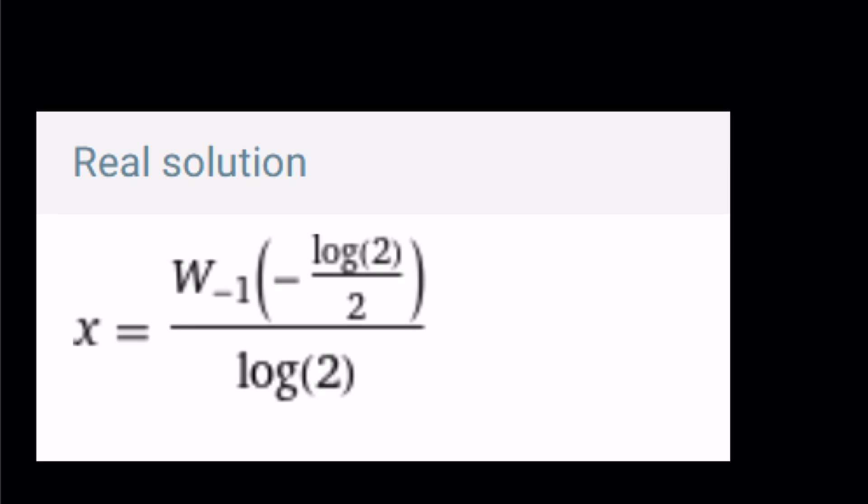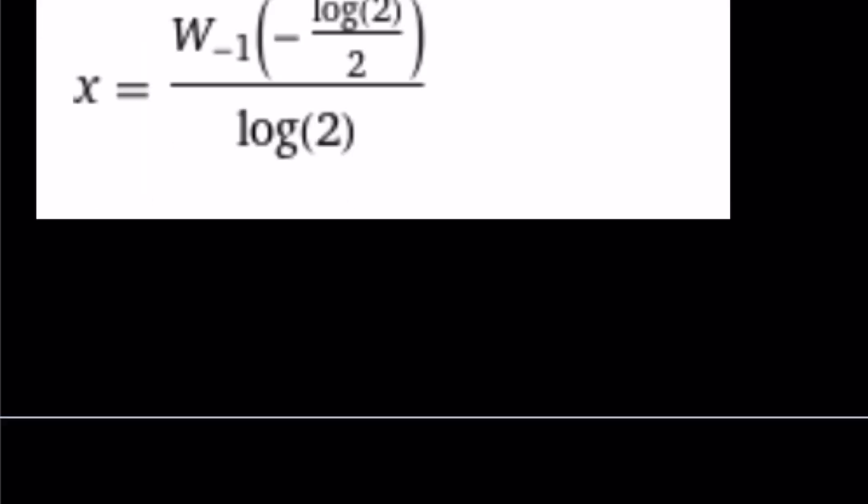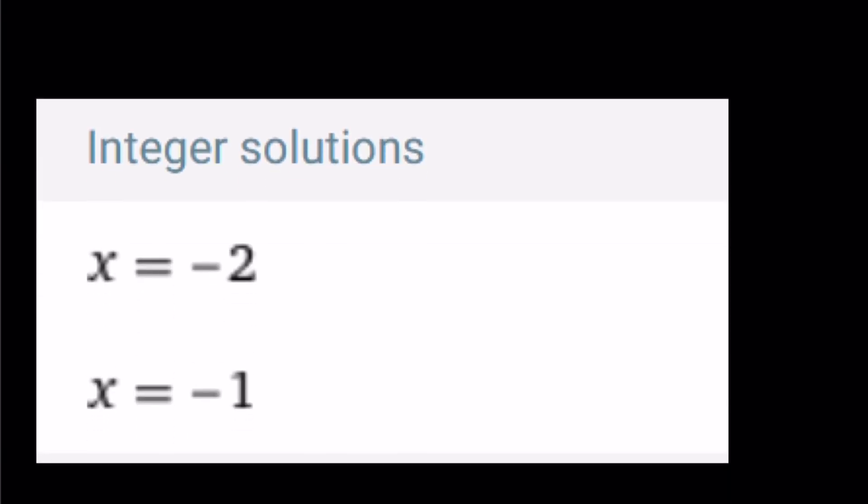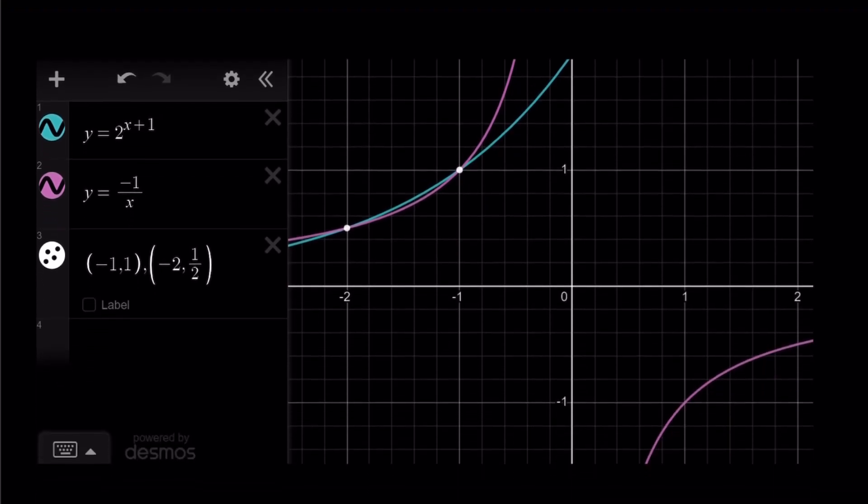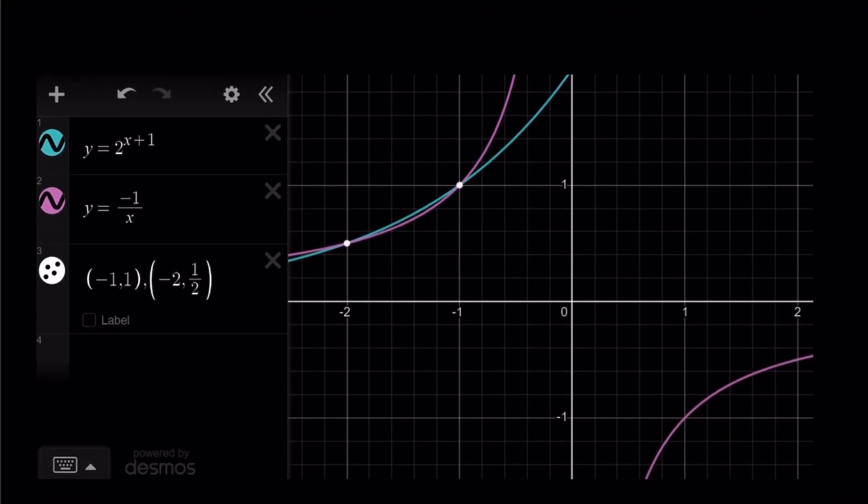It looks a little confusing, but they're basically talking about the same thing. And then integer solutions are these. Are there complex solutions? Who knows? Something to think about. And this is the graph.